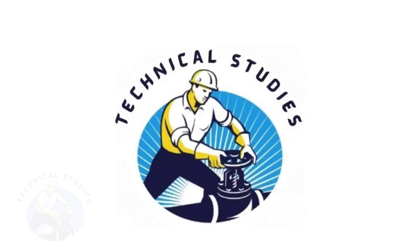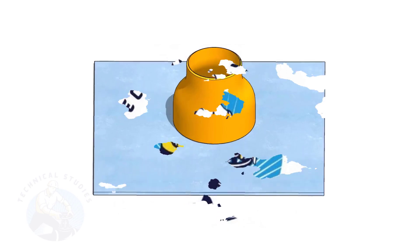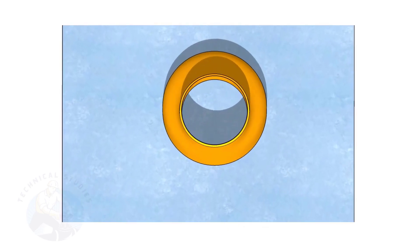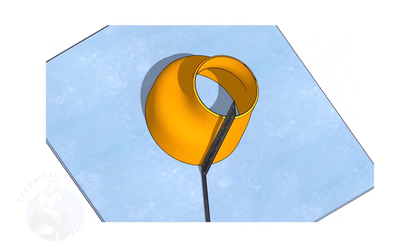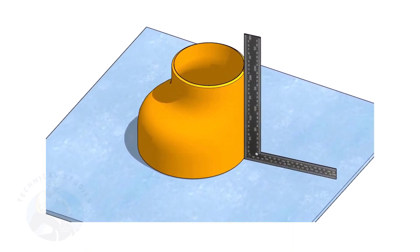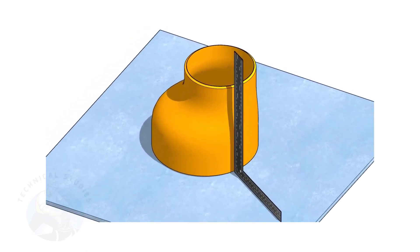Welcome to Technical Studies. Fitting an eccentric reducer to a pipe that is already fitted to another fitting like a flange, tee, elbow, etc. is a little tricky.